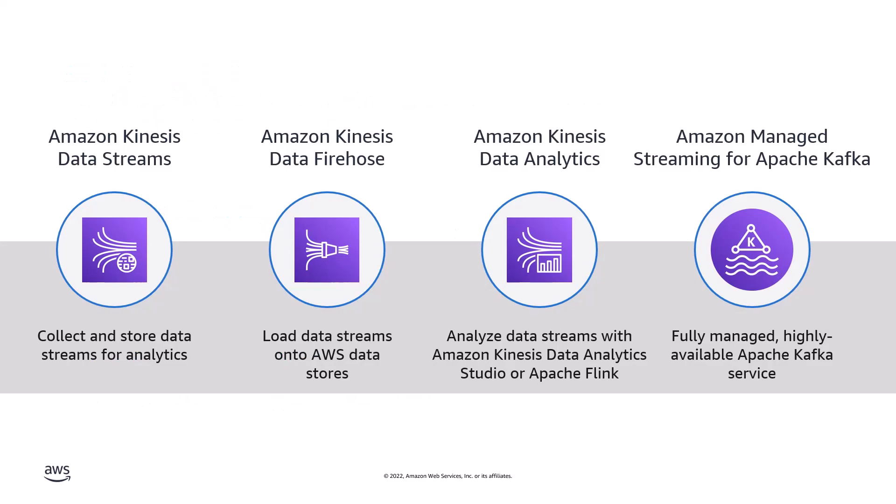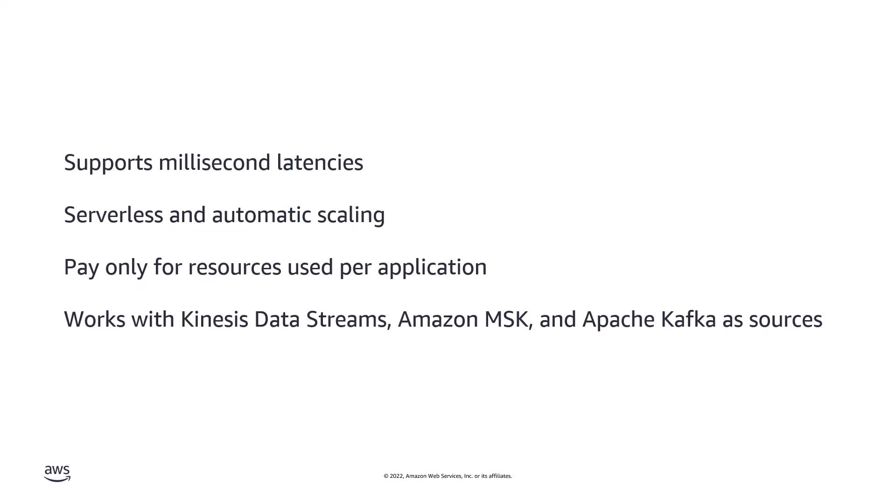AWS offers various streaming data services designed to handle these different use cases. Our focus is Amazon Kinesis Data Analytics, a fully managed service that enables building simple or sophisticated streaming applications using Apache Flink. It supports millisecond latencies, is completely serverless, and provides automatic scaling so you pay only for the resources used per application. Kinesis Data Analytics works with Kinesis Data Streams, Amazon Managed Streaming for Apache Kafka (Amazon MSK), and Apache Kafka as sources. But first, why Apache Flink?